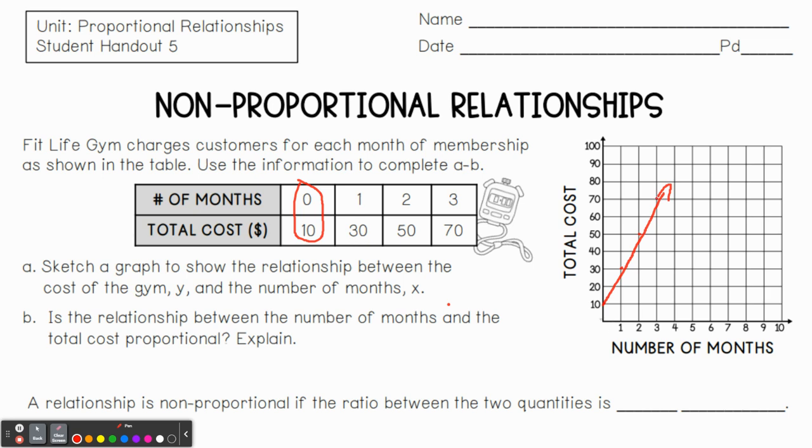So notice we still have a straight line here, but what's different about this from a proportional relationship? Well, it doesn't go through the origin zero, zero. So is this relationship proportional? No, because it doesn't go through the origin. So what that means for us is a relationship is non-proportional if the ratio between the two quantities is not constant.